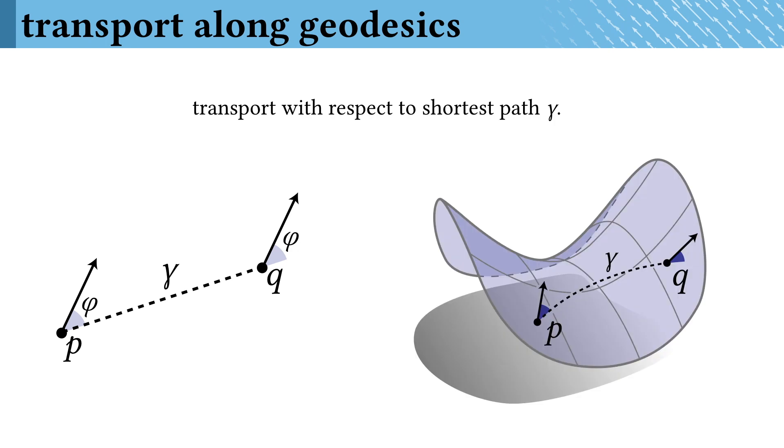And on surfaces, this definition still works. If we draw the shortest geodesic path between two points, the parallel transport of a vector makes the same angle against the path at the start and end points. This definition is useful, natural, and widely used.